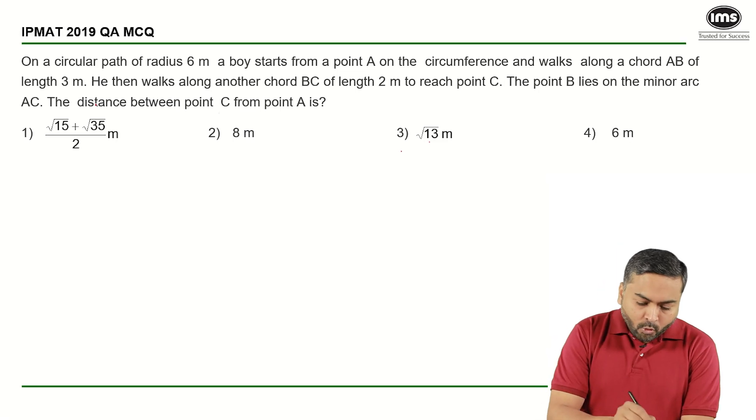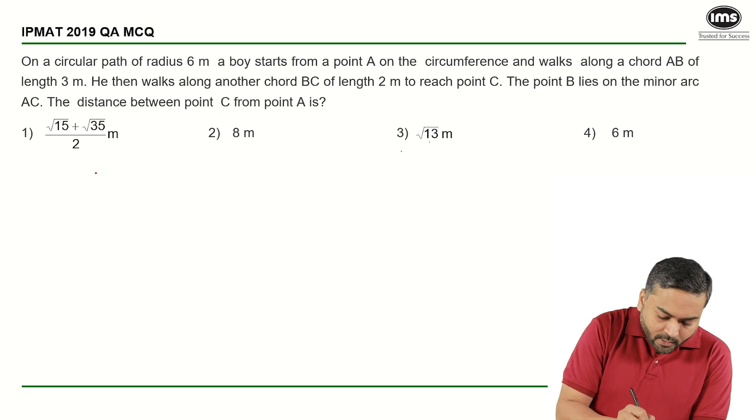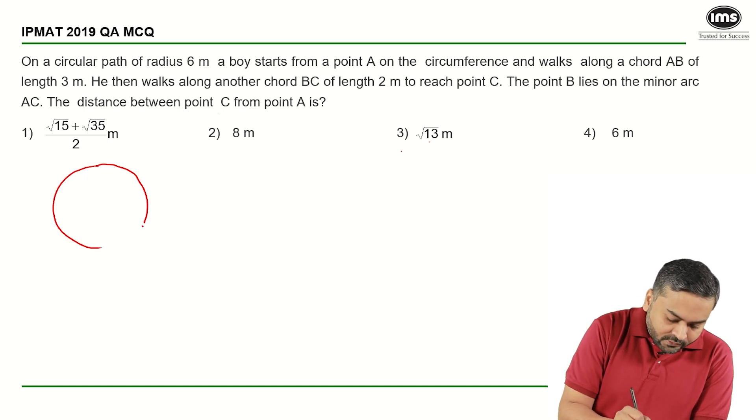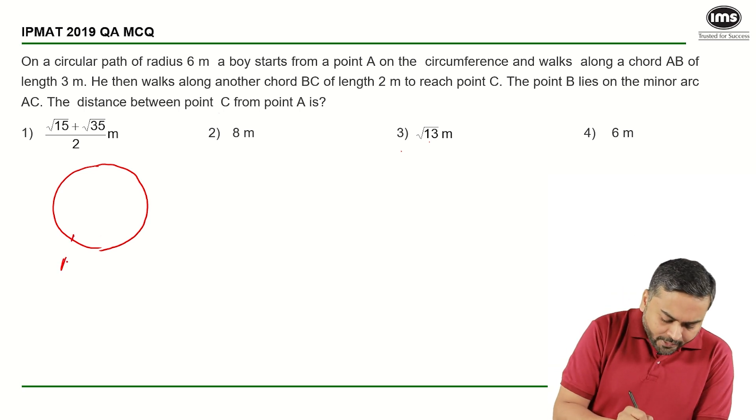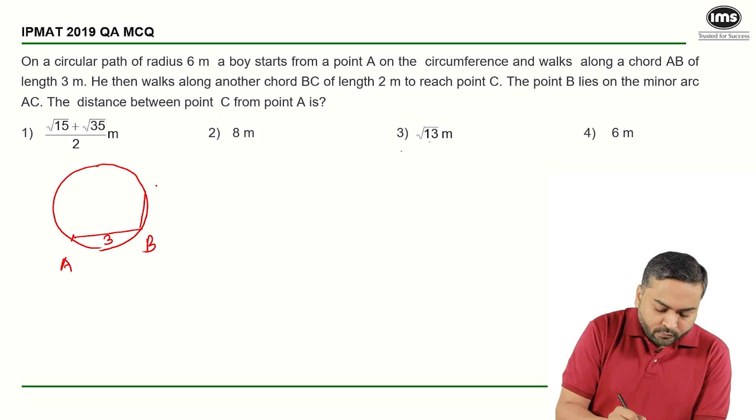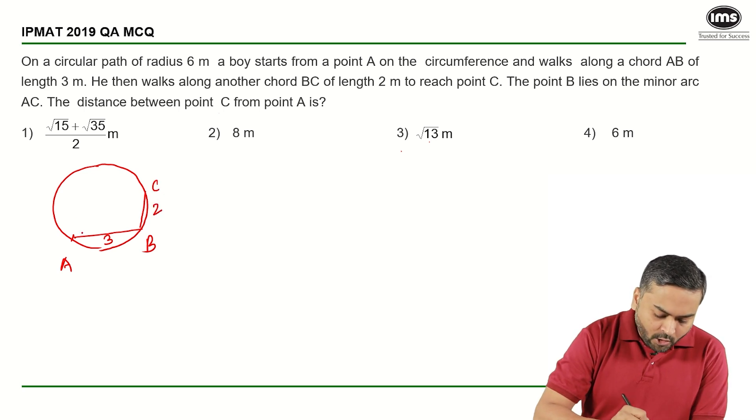So what is given to us is that there is a circular path of radius 6 and there is a boy who starts from point A, goes to B traveling a distance of 3, and then from B goes to C traveling a distance of 2. You need to find out what is this length AC.